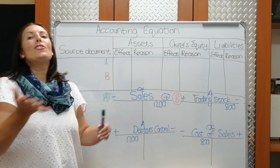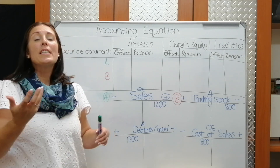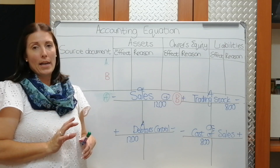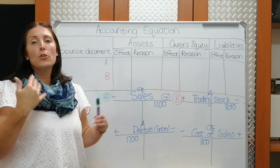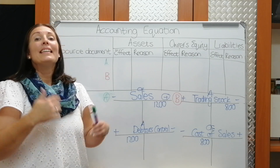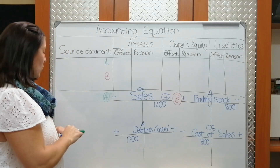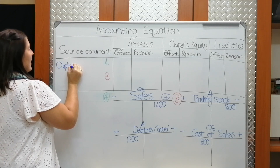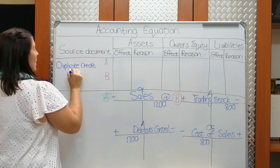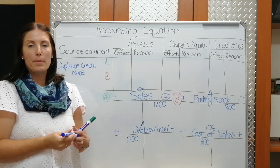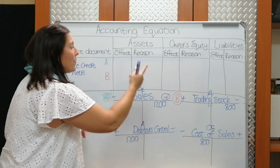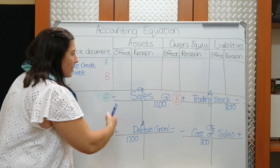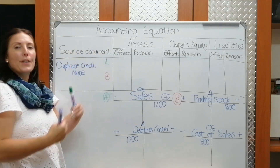Now we come to where Leboni has returned some trading stock — the stock was damaged. He returned stock to the value of 600 Rand and the cost price of that trading stock was 400 Rand. We investigated, accepted it back, and issued a credit note. Our source document is the duplicate credit note — the original was given to the customer, the debtor. Because we're working with sales and cost of sales and the client is returning stock, the returns will still have an A-part and a B-part.